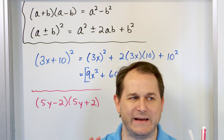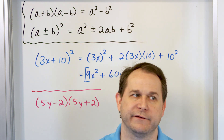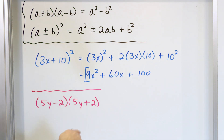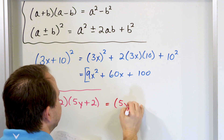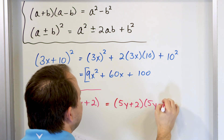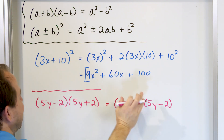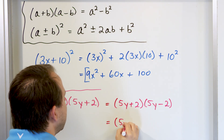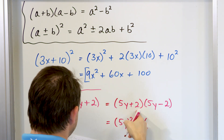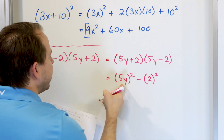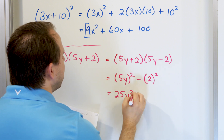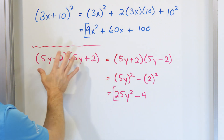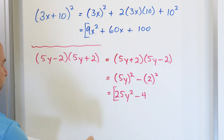I could rewrite this as (5y + 2)(5y - 2), which now matches exactly the (a + b)(a - b) form. All you do is say first term squared minus second term squared: (5y)² - (2)². When we square 5y, 5 × 5 gives 25, and y × y gives y². So the answer is 25y² - 4. That is actually quite simpler than distributing everything out and canceling the inner terms.